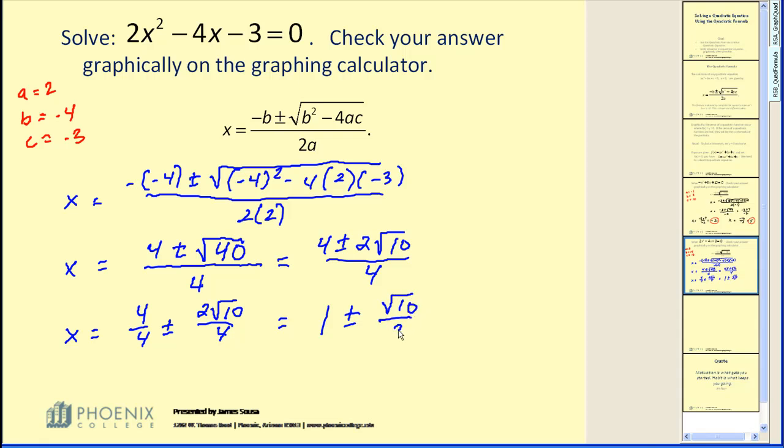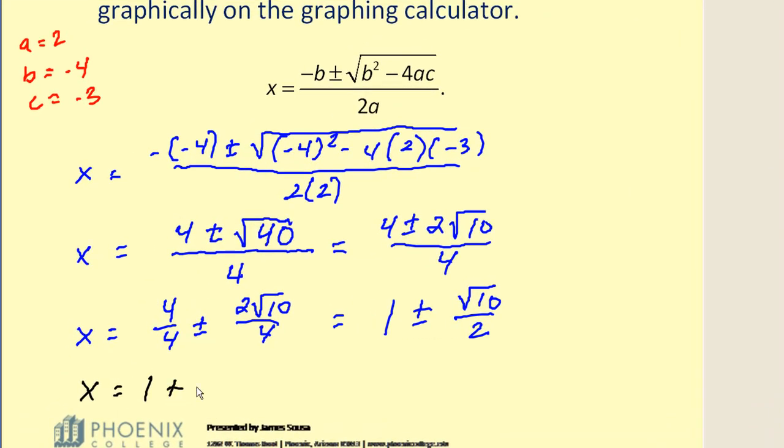So square root of 10 divided by two. So our solutions, x equals one plus square root of 10 divided by two, and x equals one minus square root of 10 divided by two.